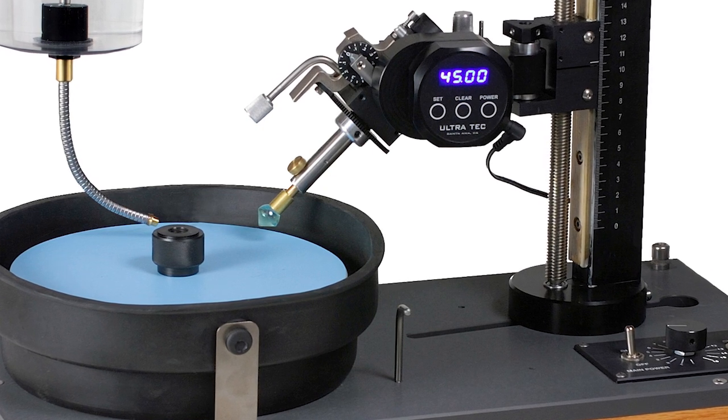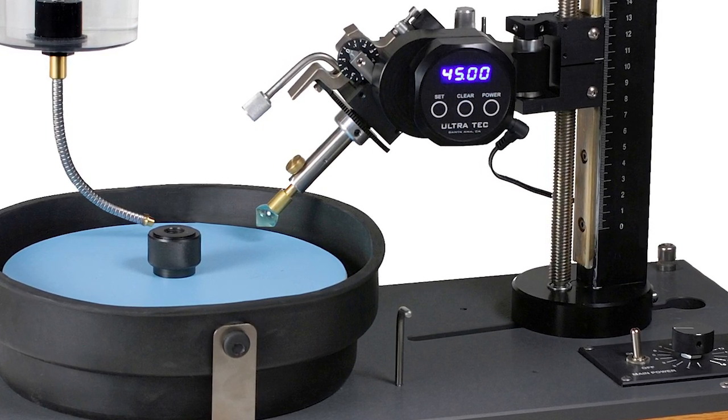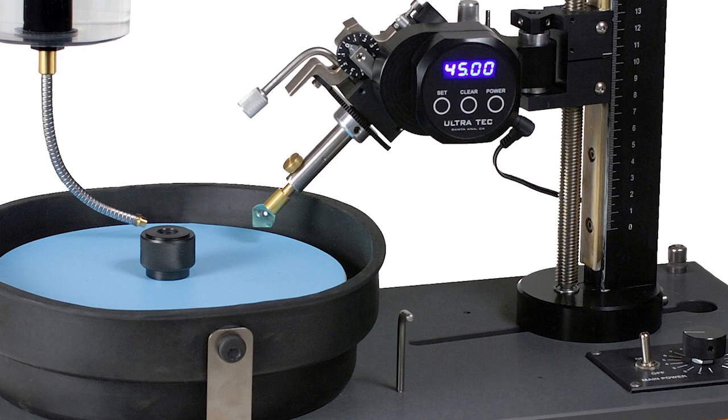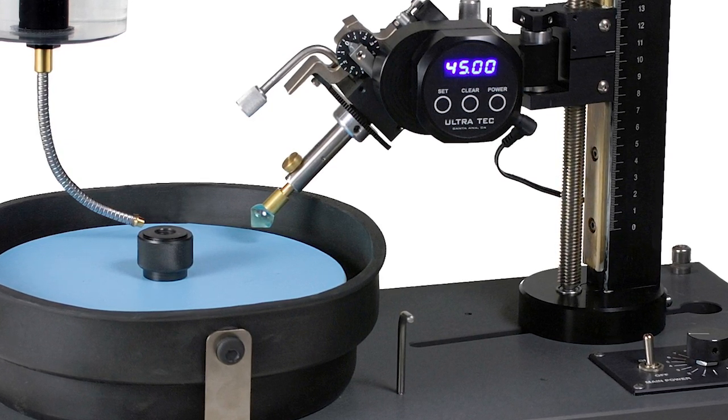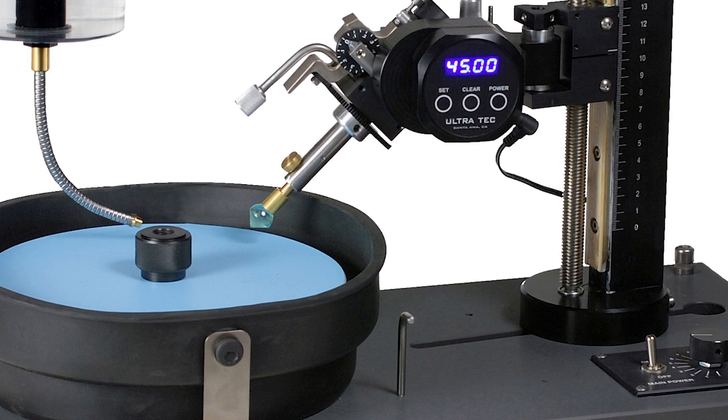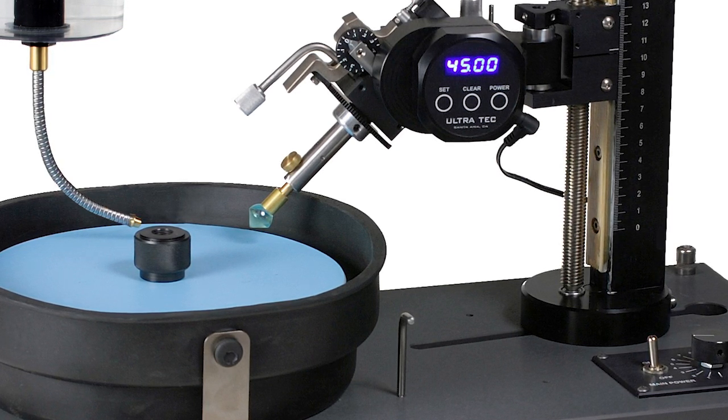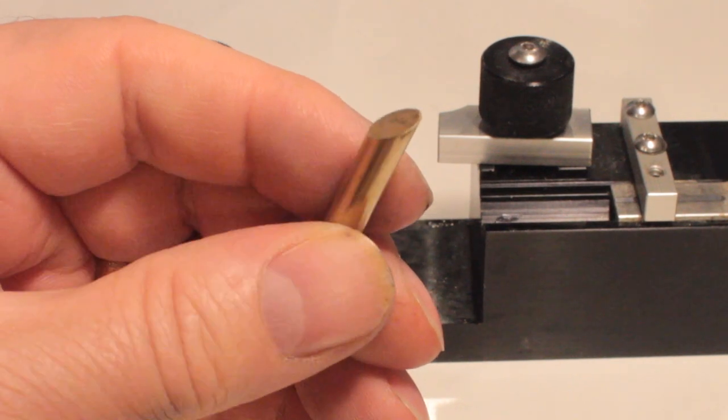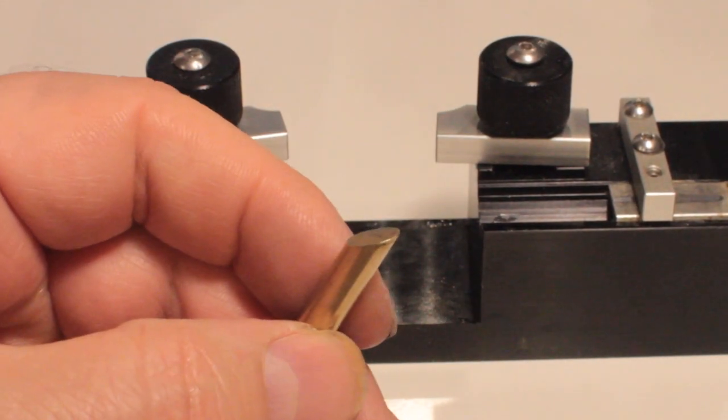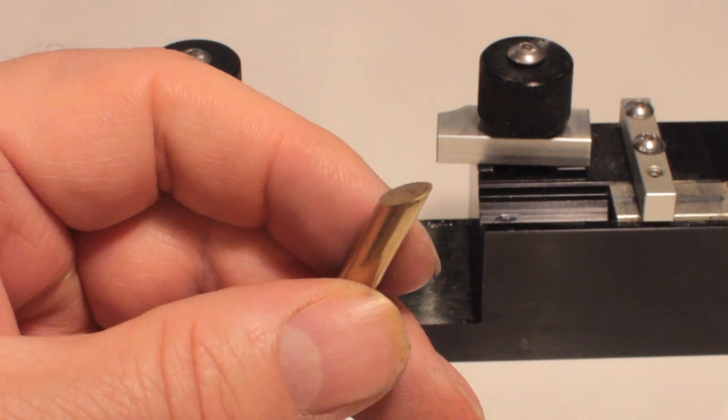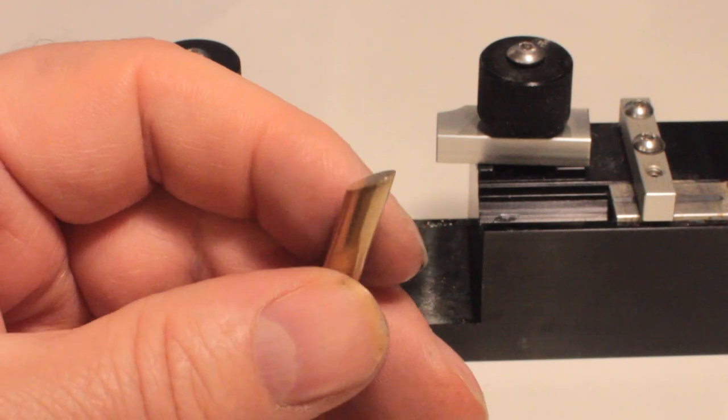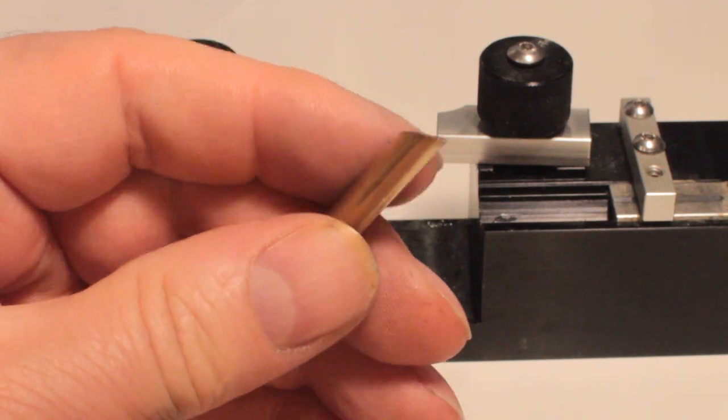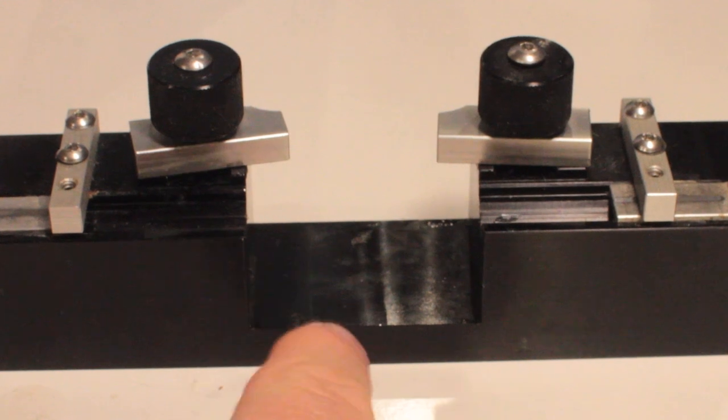The Ultratech machines use key dops. These are dops cut at a 45-degree angle so that they go into the quill of the Ultratech machine one way. This ensures that if you have to remove a stone you're working on to cut another stone, such as for a rush job, when you return the original stone to the quill, it fits back almost exactly where it was.